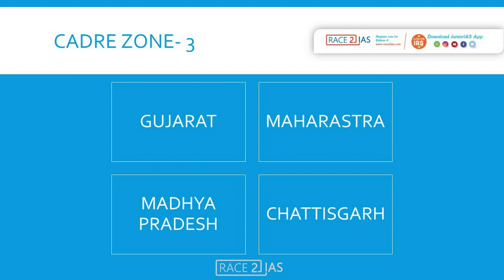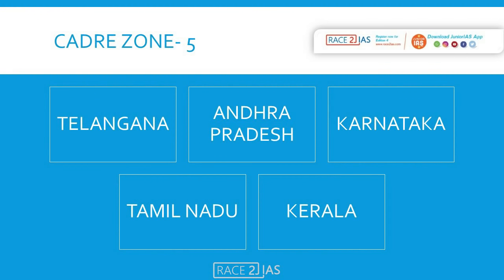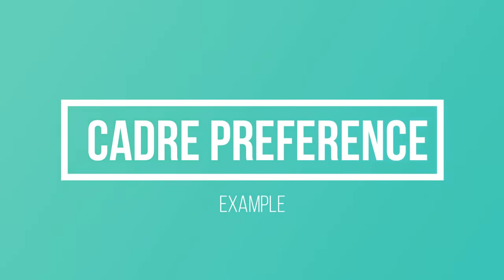Zone 4 includes West Bengal and northeastern states. Zone 5 — which is South India — includes Andhra Pradesh, Karnataka, and Tamil Nadu. I would like to try and explain cadre preferences.